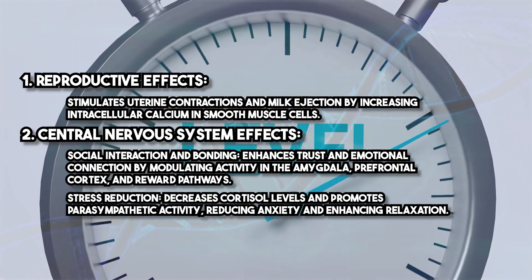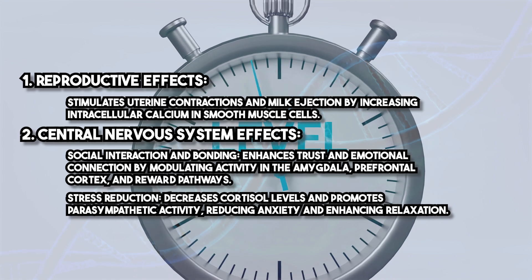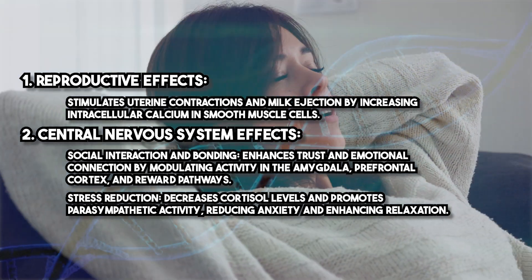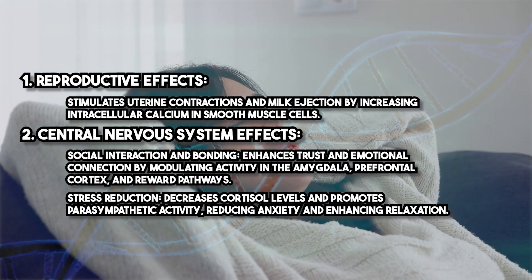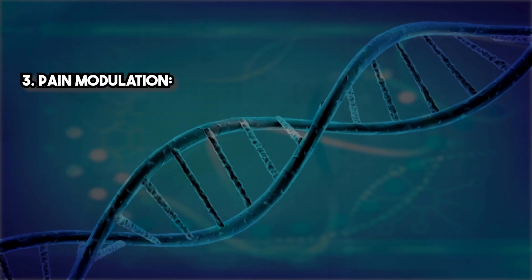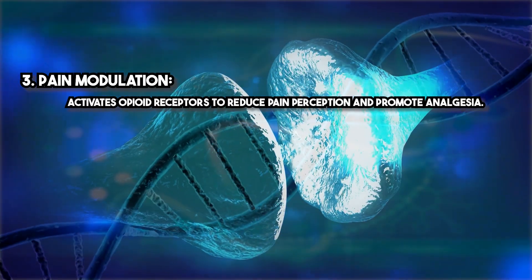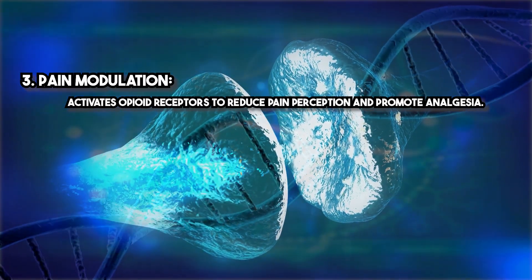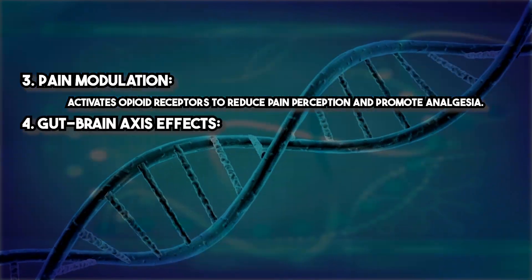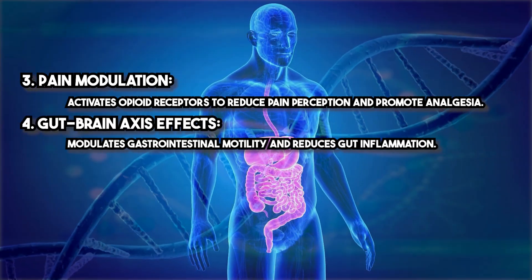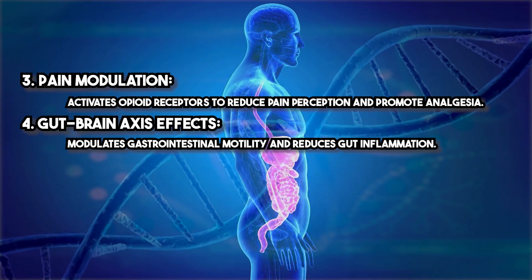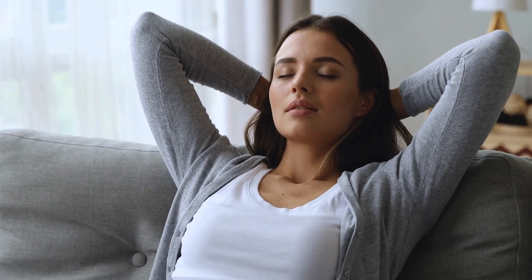Stress reduction: oxytocin decreases cortisol levels and promotes parasympathetic activity, reducing anxiety and enhancing relaxation. Pain modulation: it activates opioid receptors to reduce pain perception and promote analgesia. Gut-brain axis effects: it modulates gastrointestinal motility and reduces gut inflammation. Oxytocin's ability to improve social behaviors and reduce stress makes it a valuable therapy for individuals with social interaction difficulties and mood disorders.